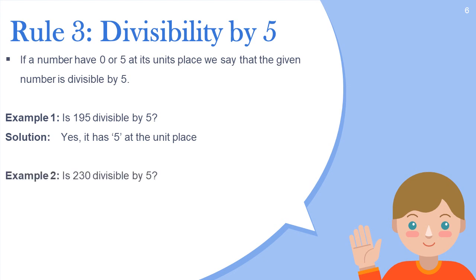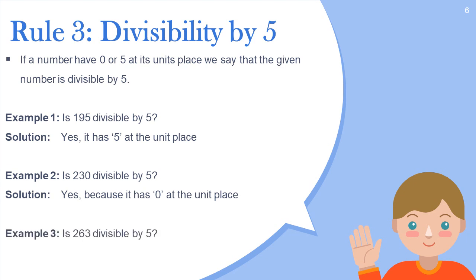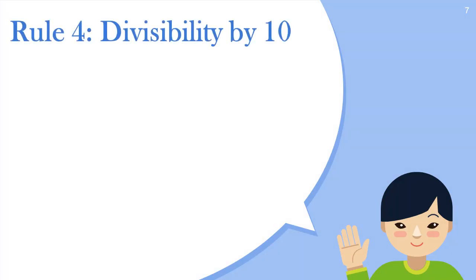Another example: is 230 divisible by five? The answer is yes, because 230 has zero at the unit place. Now look at another example: is 263 divisible by five? We say no, because there is a three in the unit place.